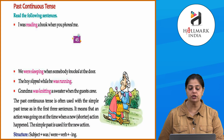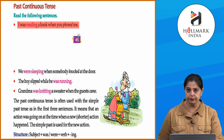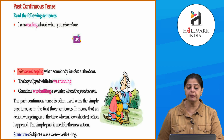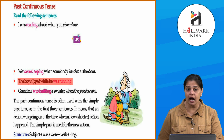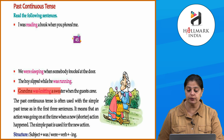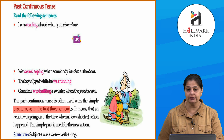Now let's look at past continuous tense. Read the following sentences: 'I was reading a book when you phoned me' — meaning I was reading when you called. 'We were sleeping when somebody knocked at the door.' 'The boy slipped when he was running.' 'Grandma was knitting a sweater when the guests came.' The past continuous tense is often used together with the simple past tense, as in these first three sentences.